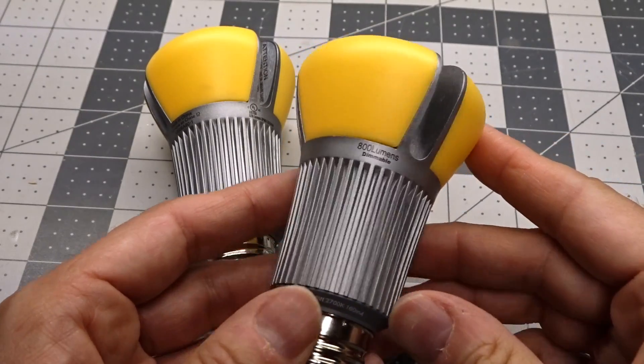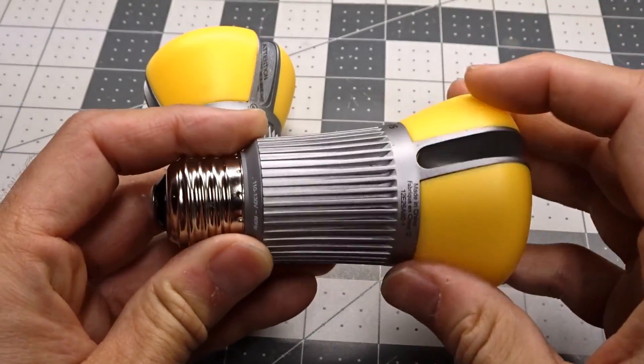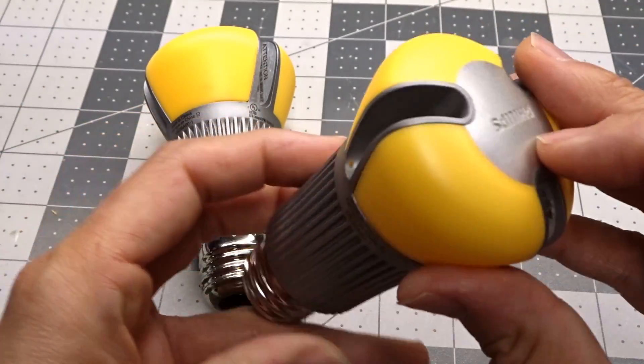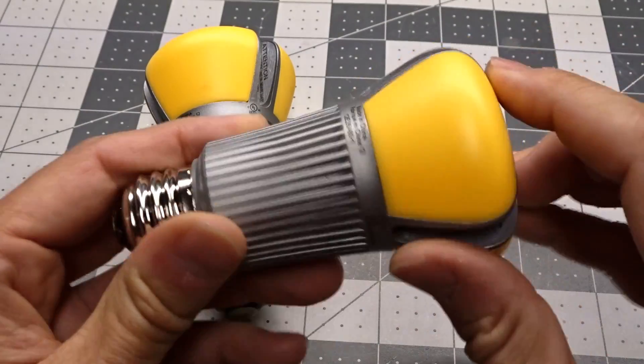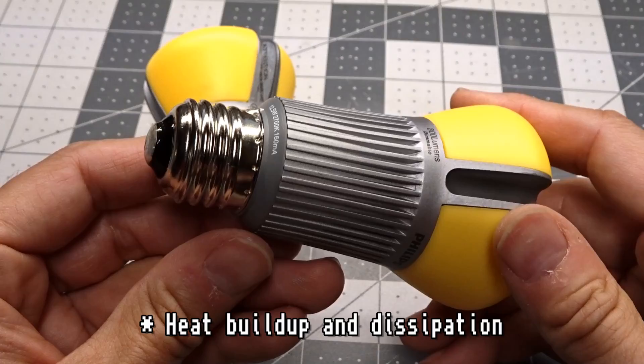First off, one thing you notice when you pick these up is they are really heavy. This is a metal heat sink and it kind of extends up into this top part. That part's plastic, but this is all metal, so clearly they were concerned about heat generation.